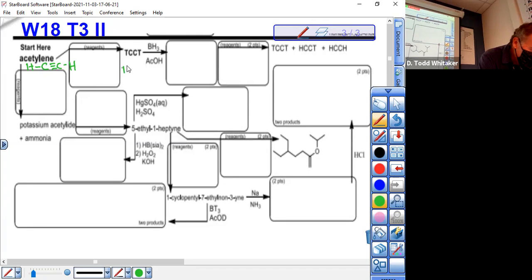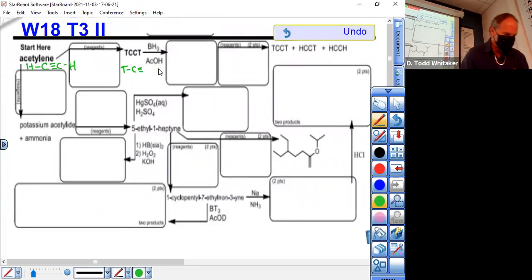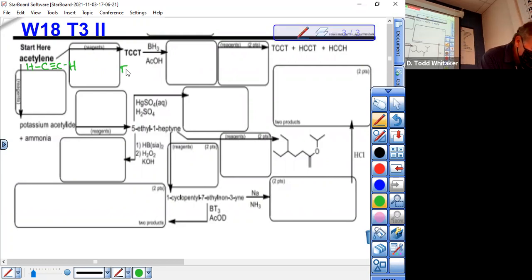And this is going to be T, C, triple C, T. That's a triple bond between the C's. Let me start over, I want to make sure it looks like a triple bond. And down here we're going to make K plus C minus triple C H. That's called potassium acetylide, with acetylide being the conjugate base of acetylene.